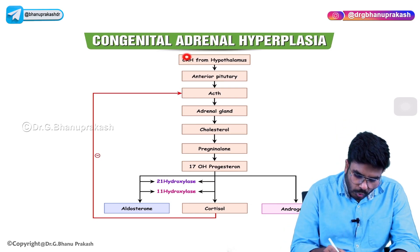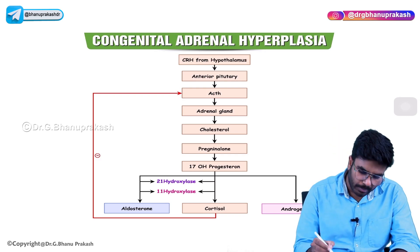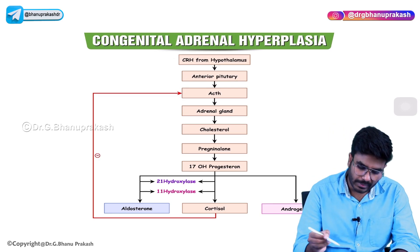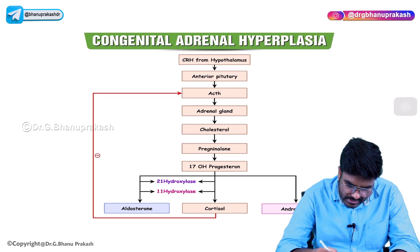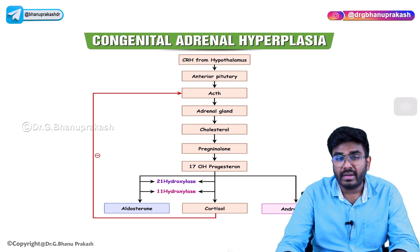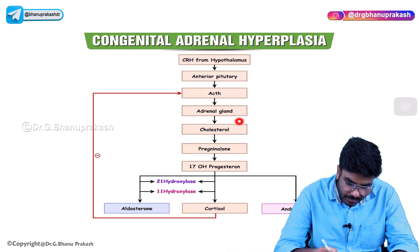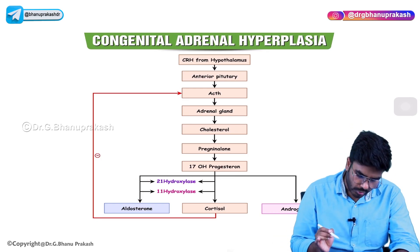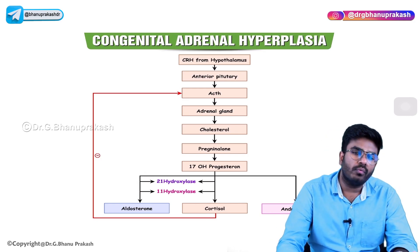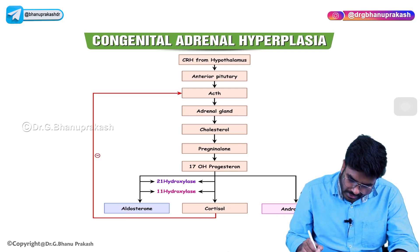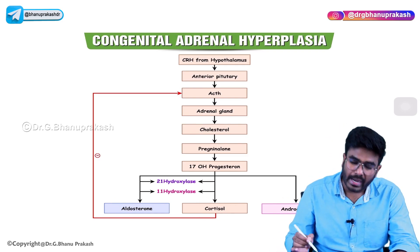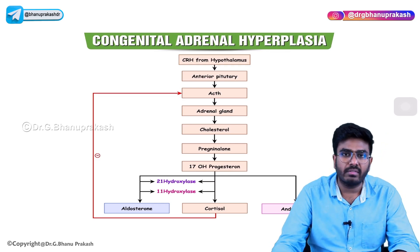We have studied that corticotropic releasing hormone is released from the hypothalamus. CRH comes to the anterior pituitary and whenever CRH acts on the corticotropes in the anterior pituitary, ACTH is released. This ACTH acts on the adrenal gland, where cholesterol is converted into pregnenolone and 17-hydroxyprogesterone. 17-hydroxyprogesterone is then converted into aldosterone, cortisol, as well as androgens. So for all these — mineralocorticoid, glucocorticoid, and sex corticoid — the precursor molecule is cholesterol, which is why we call them steroids as they have the steroid ring.